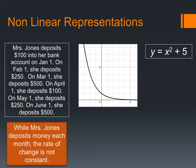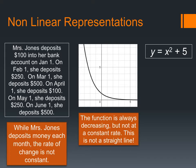Now let's look at the graph. This graph is definitely decreasing, but it's not decreasing at a constant rate. So this is not a linear function because it's not a straight line.